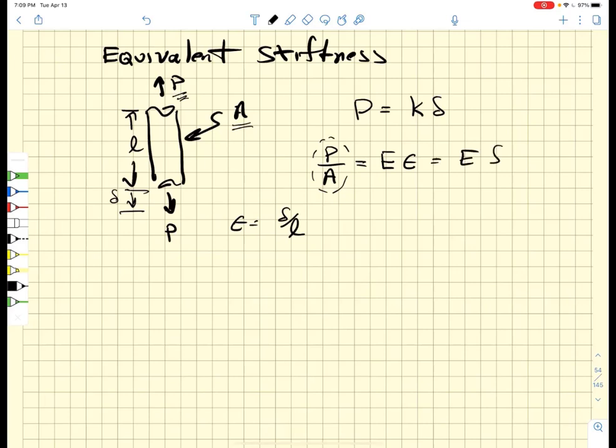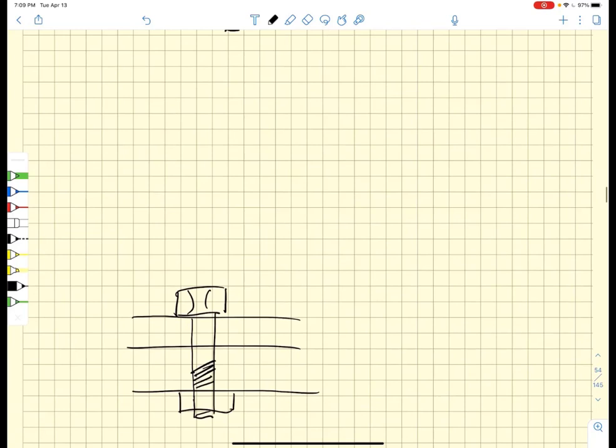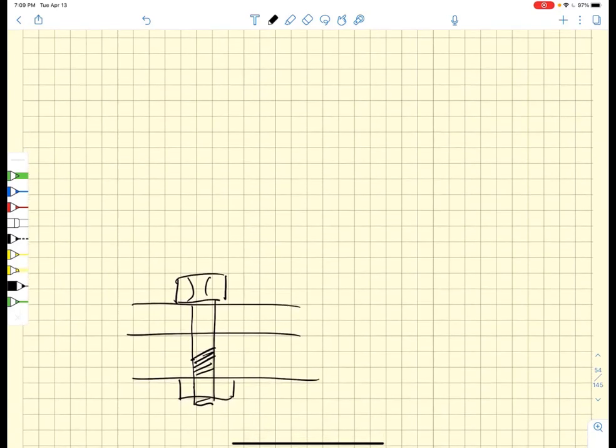I have an elastic modulus times delta over L. I'm going to solve for the load P. It's going to be equal to AE over L times delta. So the equivalent stiffness of this rod is just going to be equal to AE over L. It depends upon the cross sectional area A, the elastic modulus of the material, and the length of the material.